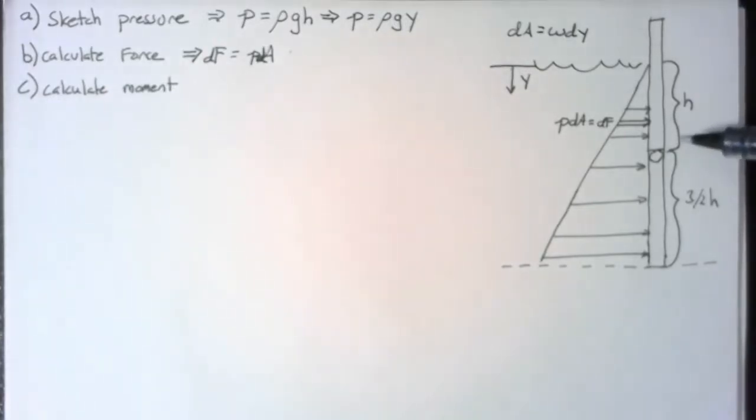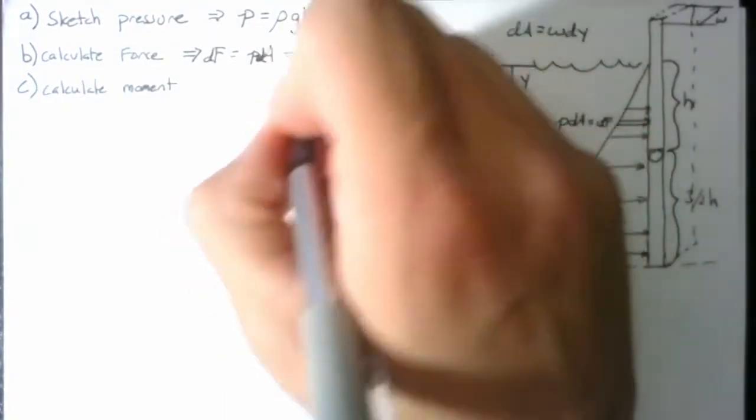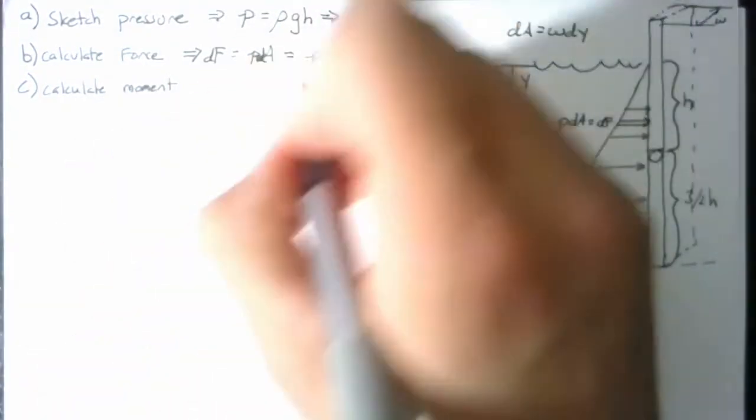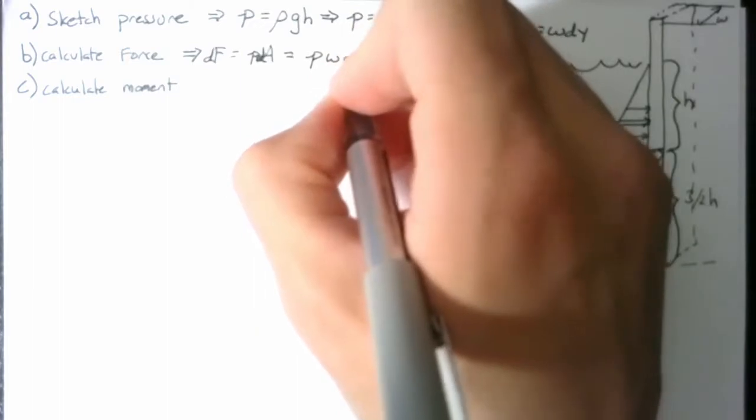So we assume that our width is constant in this direction, and I'm going to call this width w. So this allows us to write a differential force is equal to our pressure multiplied by the width times dy.